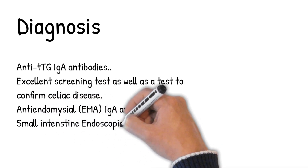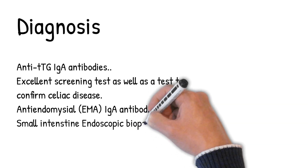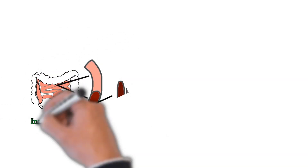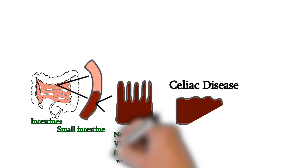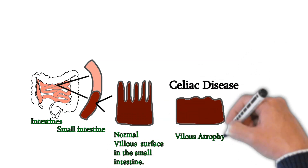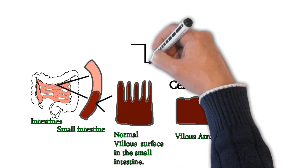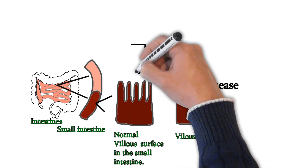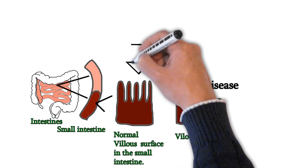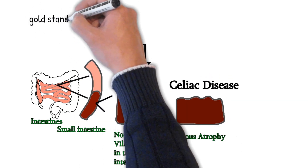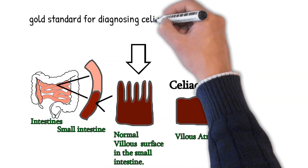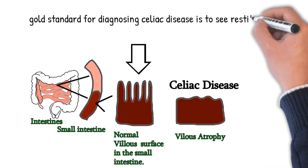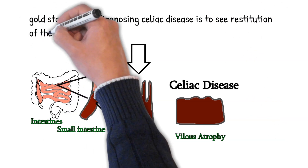Small intestinal endoscopic biopsy shows flattened villi, particularly in the duodenum and jejunum, and hyperplastic glands with intense lymphocytic infiltration. The gold standard for diagnosing celiac disease is to see restitution of the villi after gluten is eliminated from the diet.